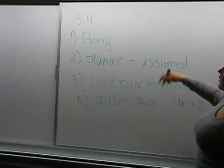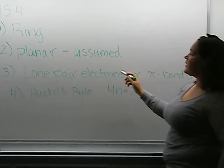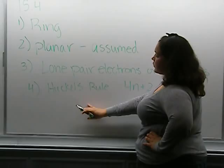And that's about it. You have to remember the 4 principles. It must be a ring. It has to be planar, but that is always assumed. So you just assume that if it's a ring that it's planar. And it has to have lone pair electrons or pi bonds on each of the carbons.